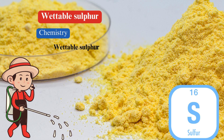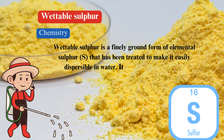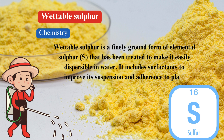Chemistry. Wettable sulfur is a finely ground form of elemental sulfur (S) that has been treated to make it easily dispersible in water. It includes surfactants to improve its suspension and adherence to plant surfaces.